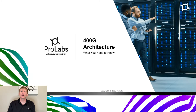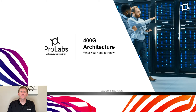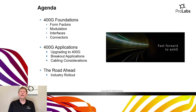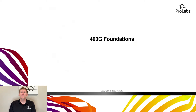Hi, my name is Ray Hagen, I'm the global product line manager for Prolabs. We're here today to talk about 400 gig architectures and what you need to know as you deploy 400 gig. Our agenda is to discuss a few key themes: our foundations — modulation, form factors, interfaces, connectors — things critical to deploying 400 gig, applying that to real-world networks, data centers, and service providers, and also what's beyond 400 gig.